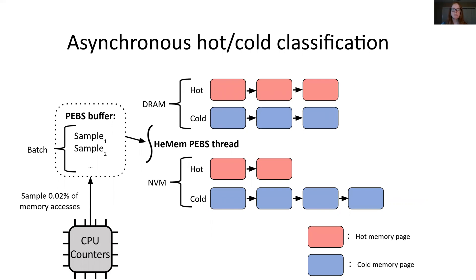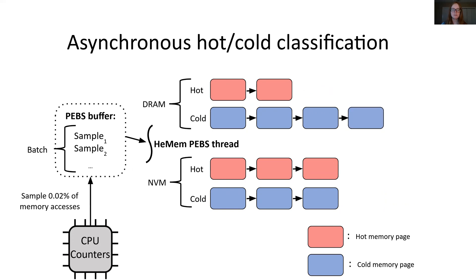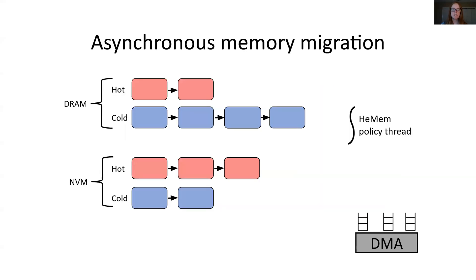Using these samples, the PEBS thread classifies memory pages as either hot or cold by placing them into the appropriate hot or cold lists. If the PEBS thread receives a lot of samples to a particular page, it may classify that page as hot, signified by moving that page from the cold list to the hot list. To maintain a fresh view of which pages are hot or cold, the PEBS thread will periodically cool pages by moving them from the hot list to the cold list.